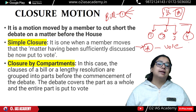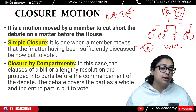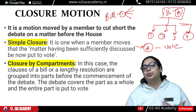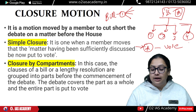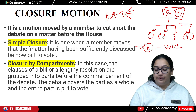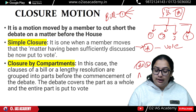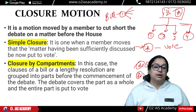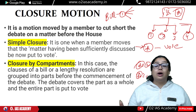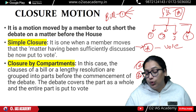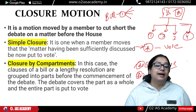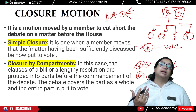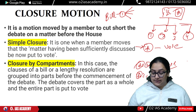The second type is Closure by Compartments. The clauses of a bill or lengthy resolutions are grouped into parts before the commencement of debate. The debate covers each part as a whole, and the entire part is put to vote. For example, clauses A1 and A2 are grouped together, A3 and A4 are grouped together, and each group is voted on as a compartment.